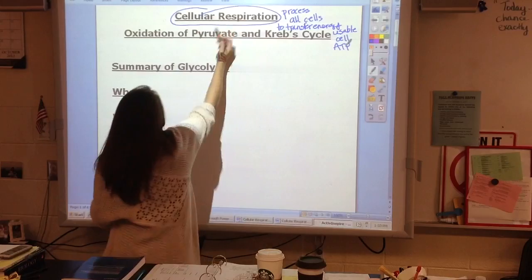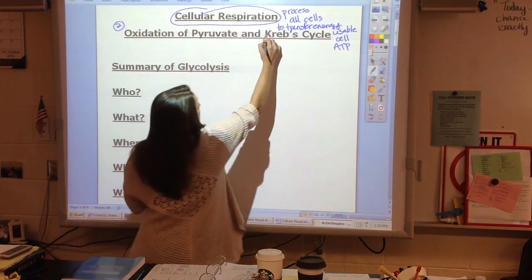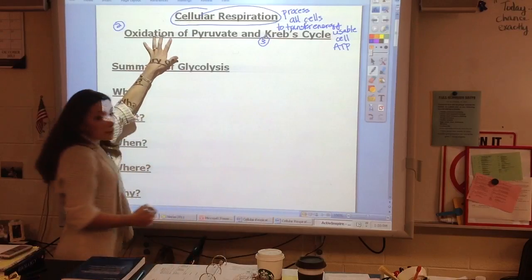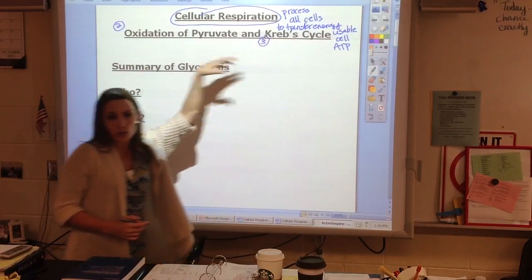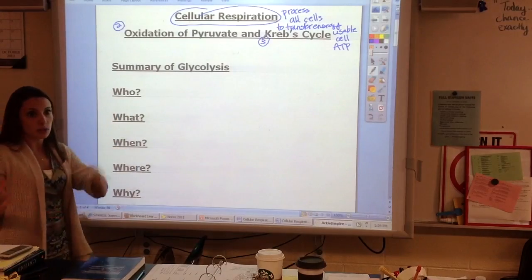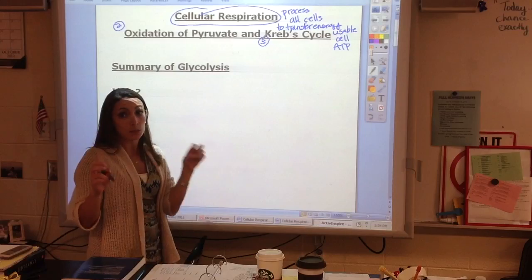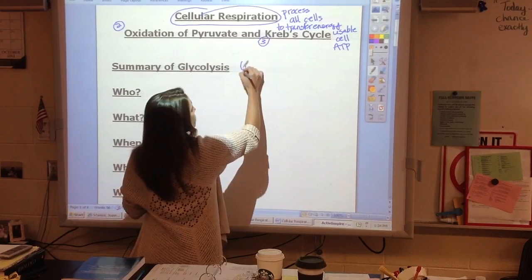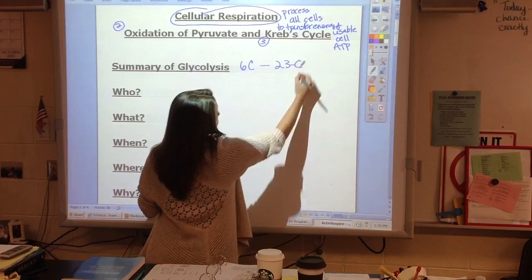Right now in cellular respiration, we're moving on to stage 2, stage 3, the oxidation of pyruvate and the Krebs cycle. We want to take a second and think, where did we come from? We just came from glycolysis, which is literally the splitting of sugar. This is where we went from a 6-carbon sugar to two 3-carbon sugars.